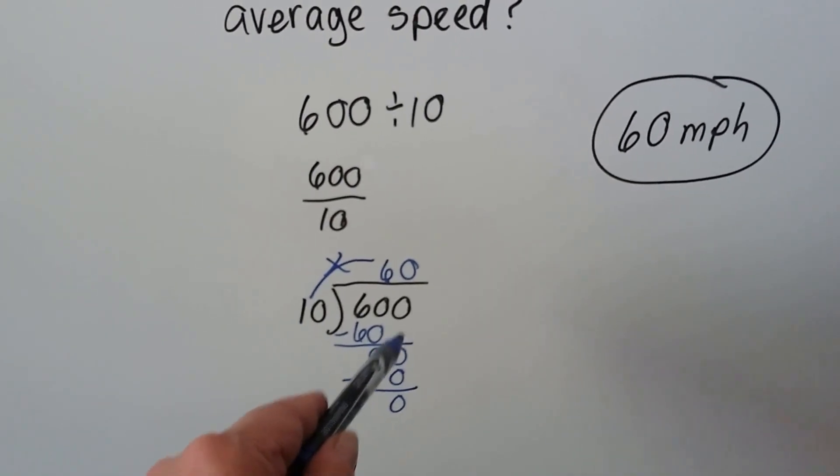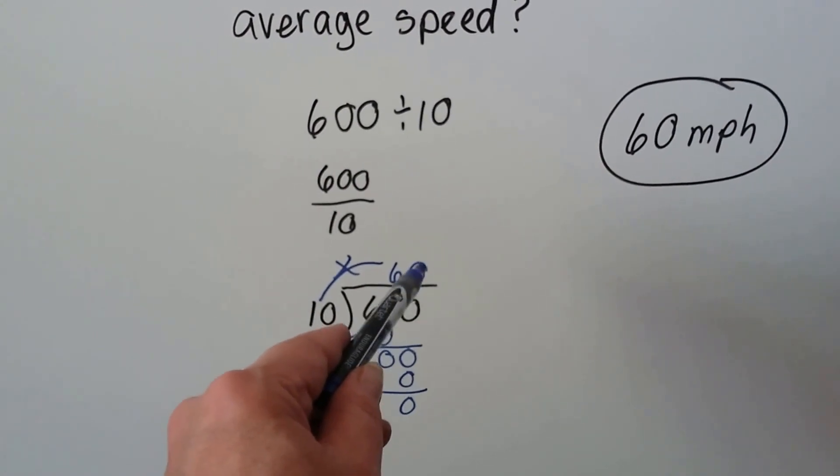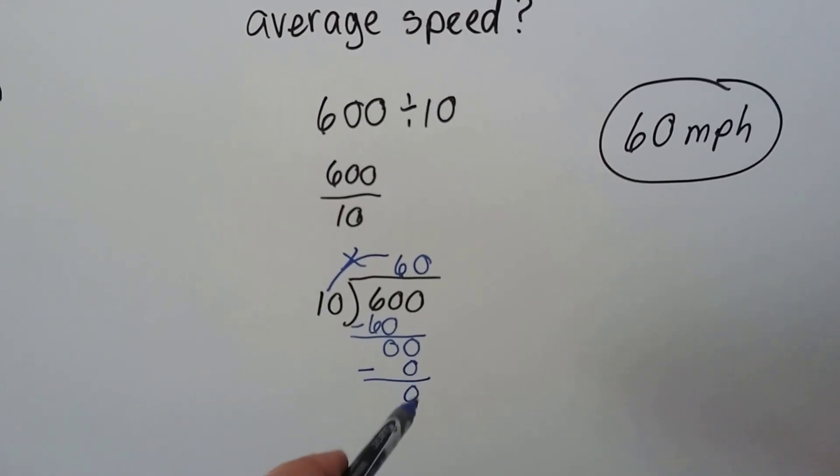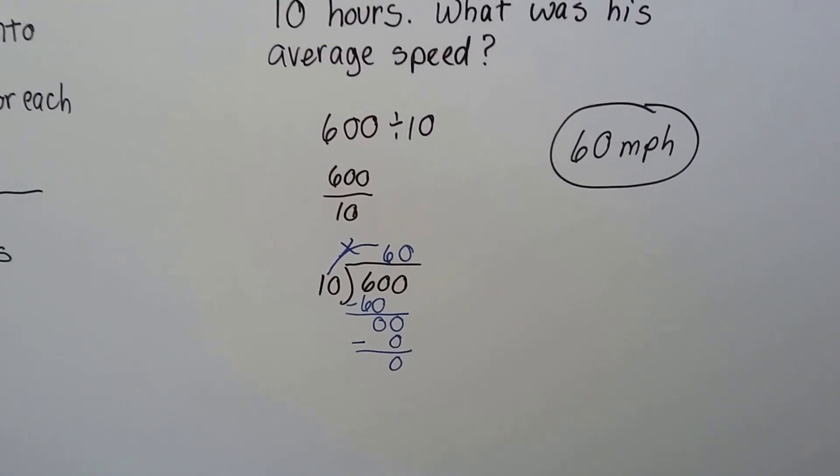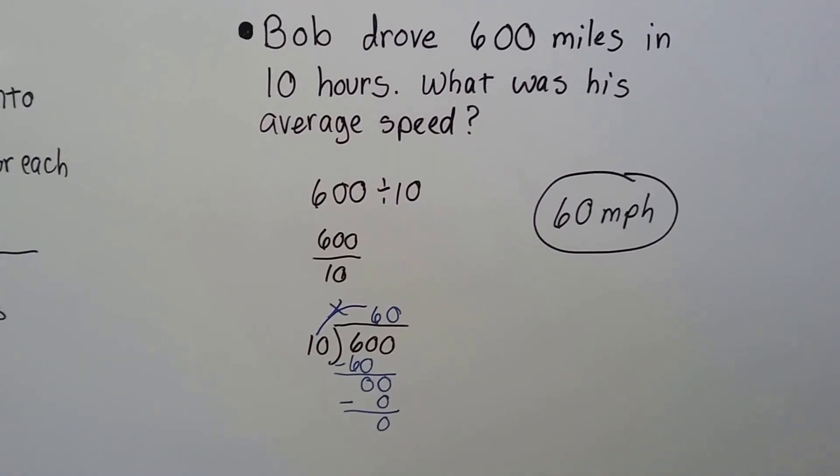How many times can 10 go into 0? 0. So we write our 0 up here. 10 times 0 is 0. We subtract and get a 0 remainder. So his average speed was 60 miles an hour.